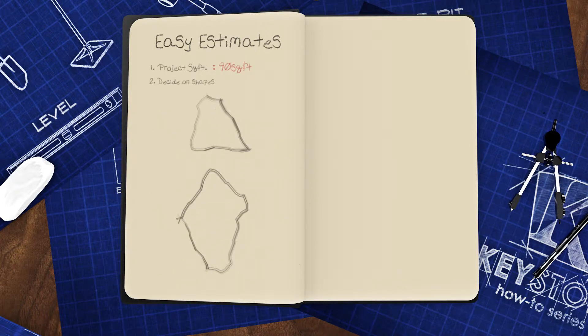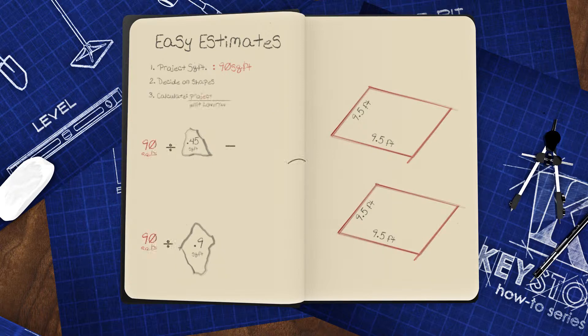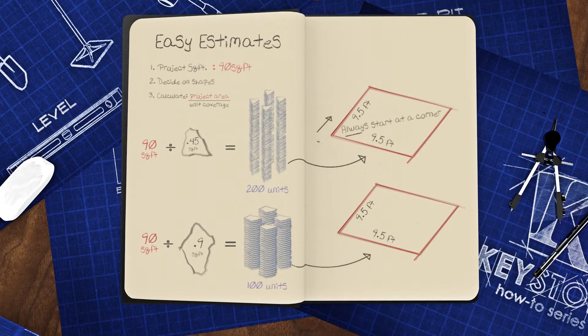All you have to do is remember that the 12-inch unit covers 0.45 square feet, and the 18-inch unit covers twice as much, so that'll be 0.9 square feet. Just divide your square footage by one of these numbers to get an estimate of how many units you need to buy.